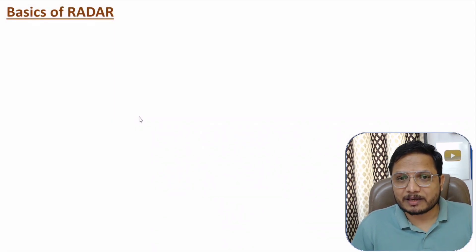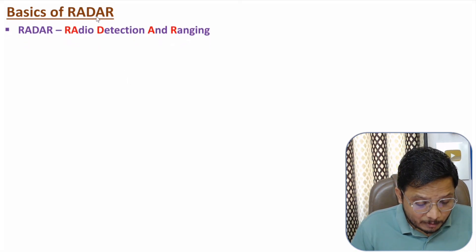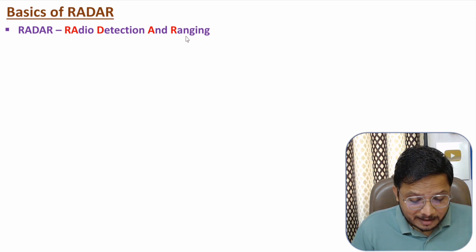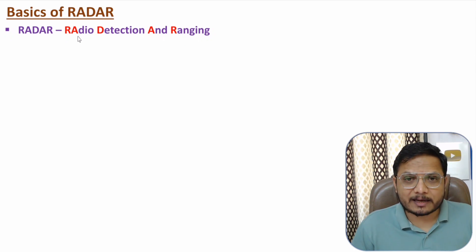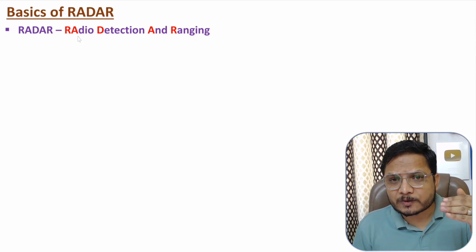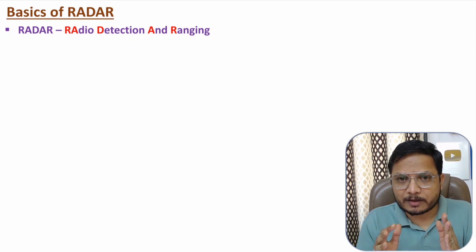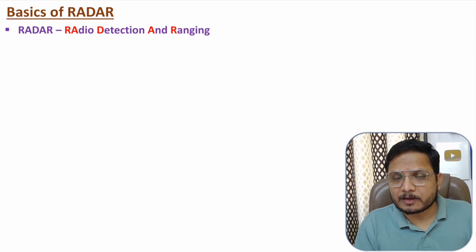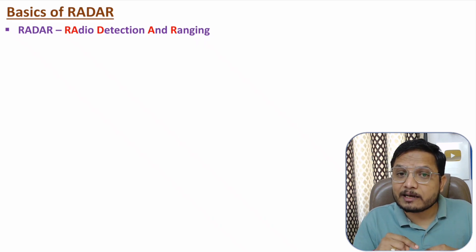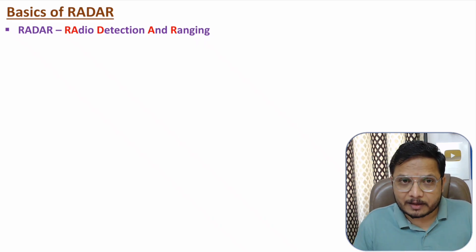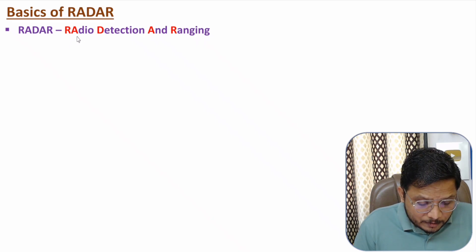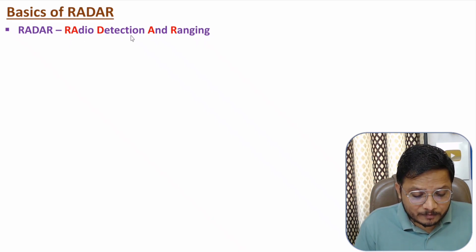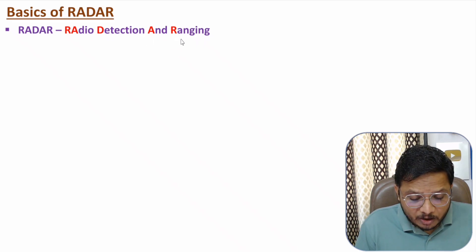Let us begin with the basics of radar system. First of all, you need to understand the full form of radar. RADAR means Radio Detection And Ranging. Radio means we will be transmitting radio waves with the use of the radar system. Radar operates at gigahertz of frequency, and after transmitting radio waves we will be detecting objects — detection of an object is done with the identification of the range of the object.